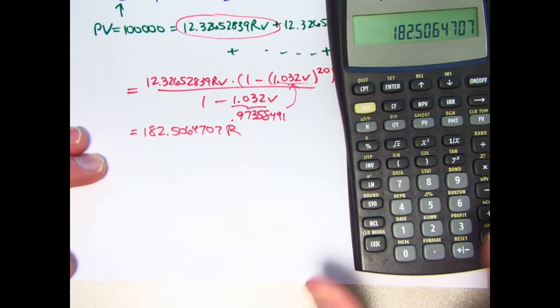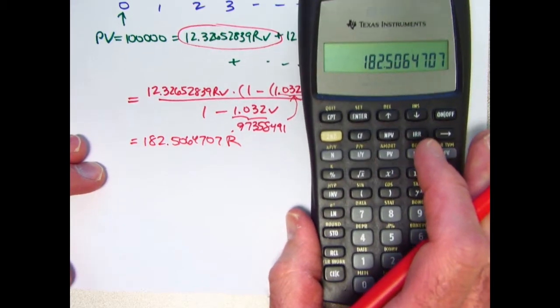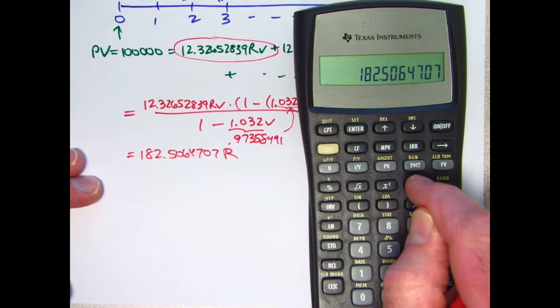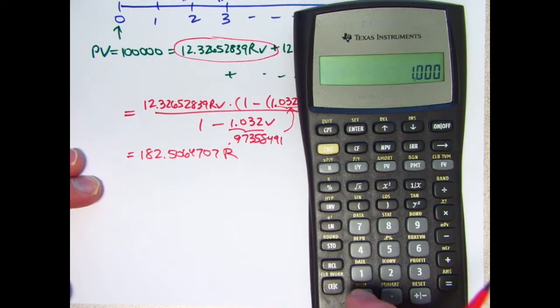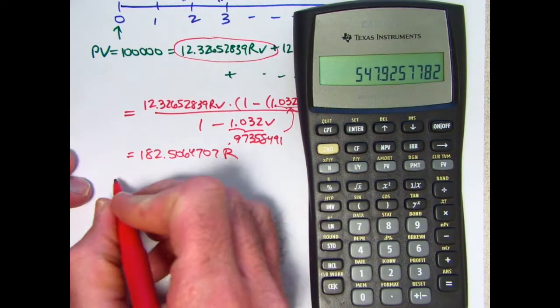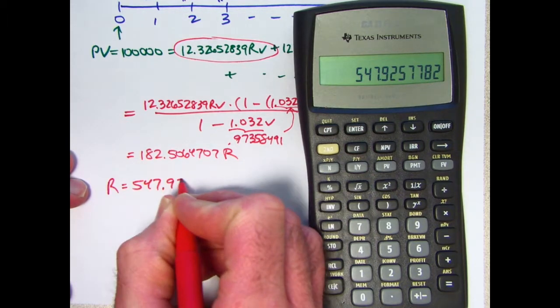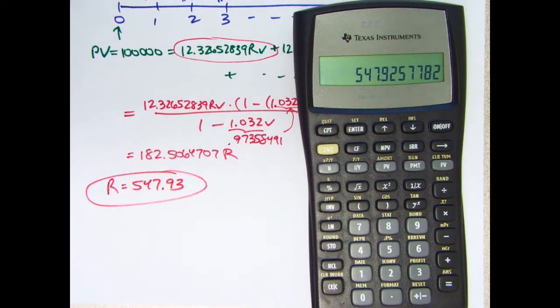So now divide both sides by this number. I'll take its reciprocal and multiply times 100,000. And it looks like R is 547.93 or about 548. And that is the correct answer.